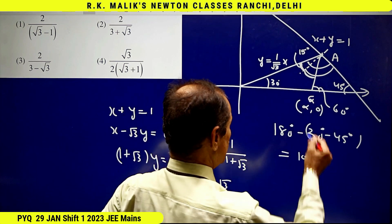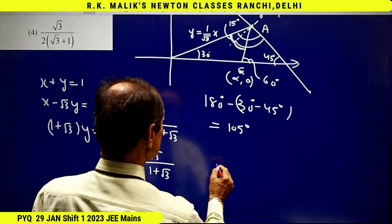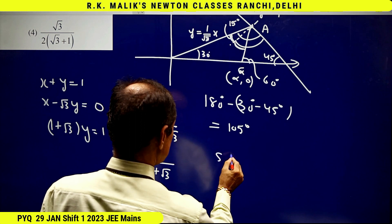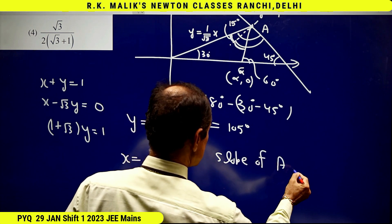And because this angle is 60 degrees, using slope of AQ, I get the coordinates of point A.